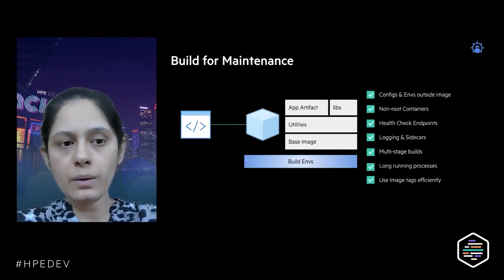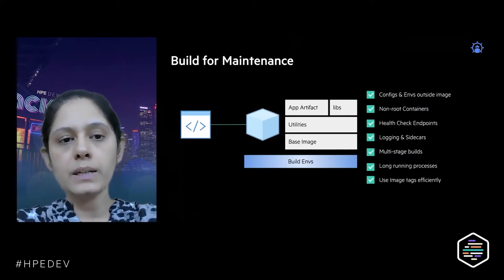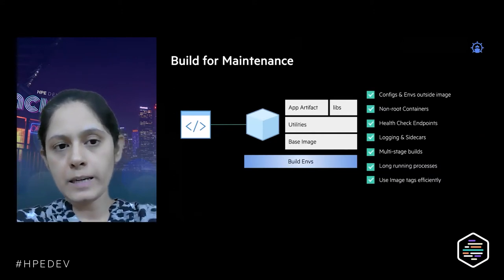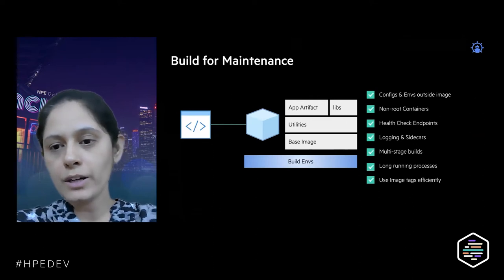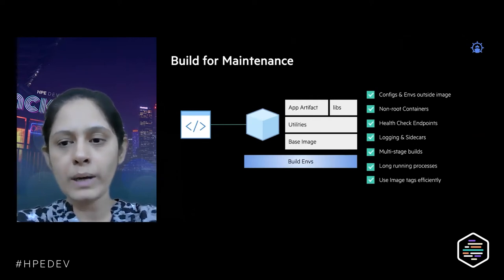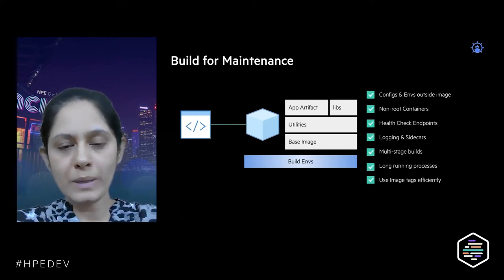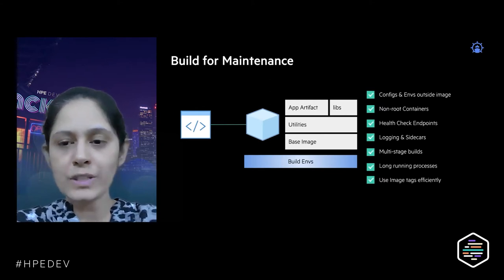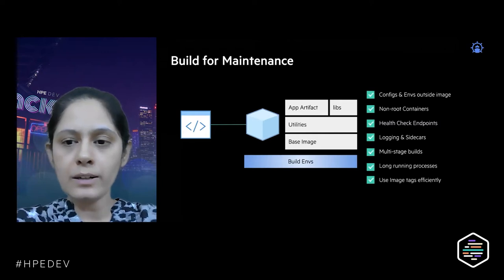Let's look at building your application — taking a microservice and transforming it into a Kubernetes-based deployment. As a first step, we always need to consider long-term maintenance right from day one. It's not just about converting that microservice to a deployment; we should also keep maintenance in mind. For example, if we have configs and environment variables, as best practice we should keep all of these in config maps or secrets so we don't bind this information with our Docker images.